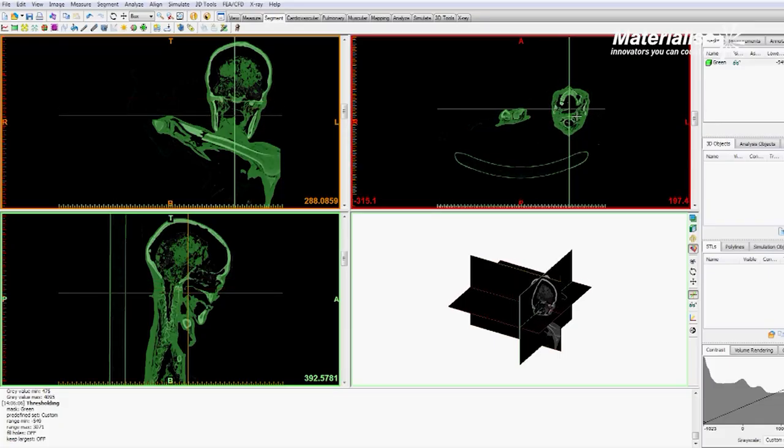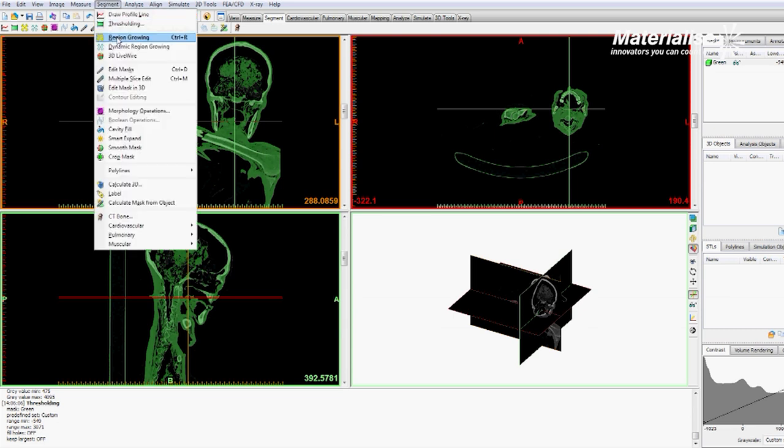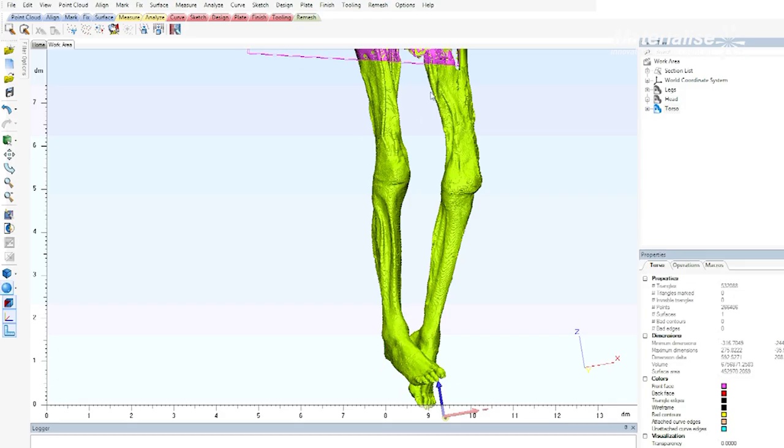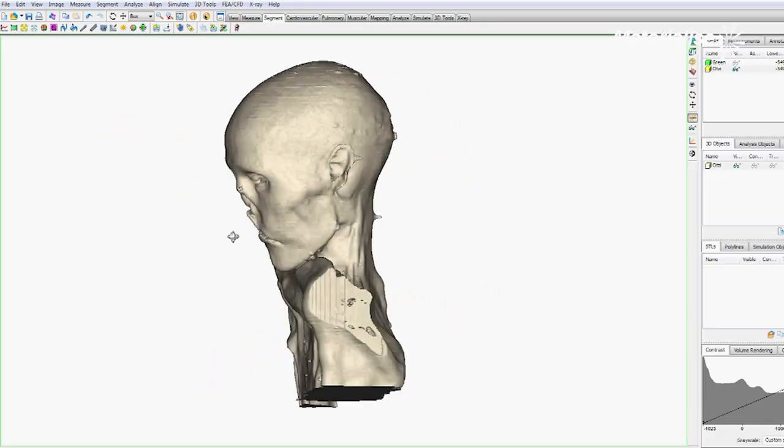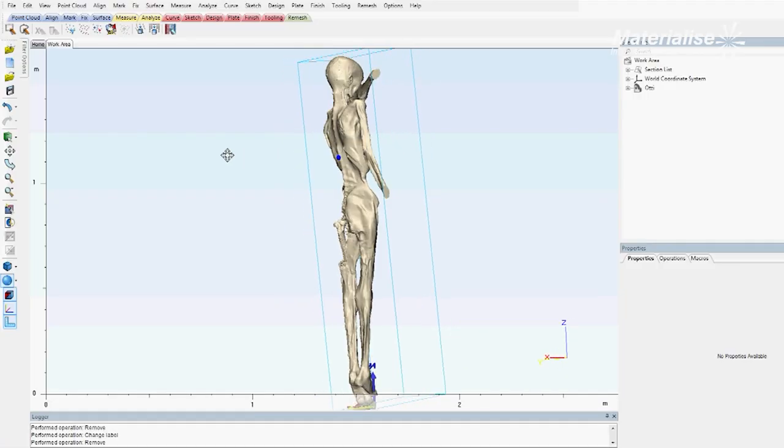They've taken the CT scan data from the Iceman, then Materialize has segmented it and we now have a printable 3D file. Today they're lifting the final printed model from the resin, and so we get to see the resin for the first time.